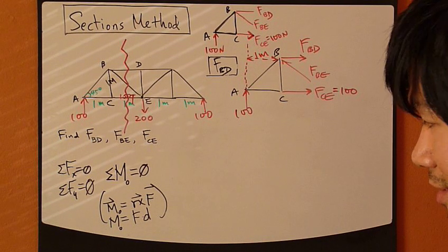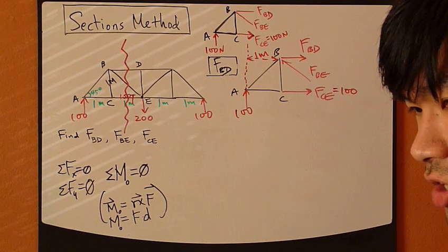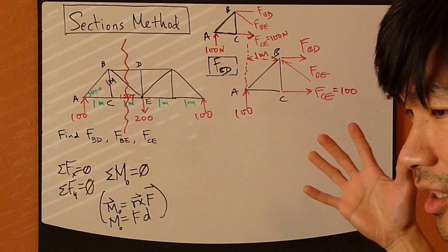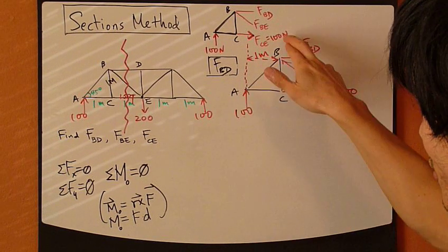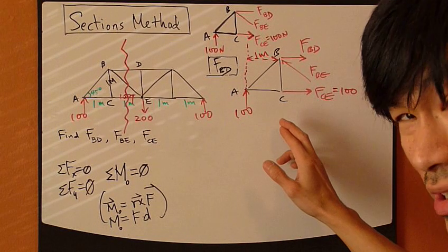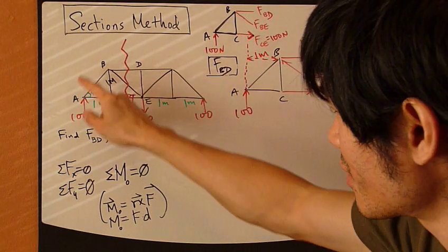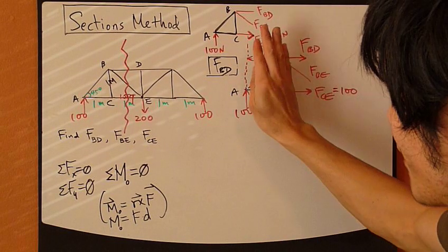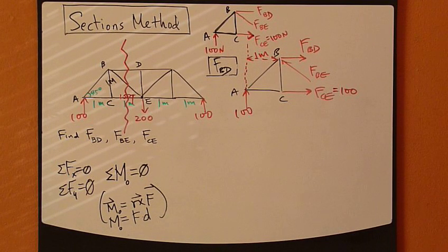Here's the trick: you don't have to take a moment about a joint that you see in the free body diagram. You can pick a joint outside of this free body diagram — any joint in the truss that is outside of this section. That will work, and that's exactly what we're going to do.